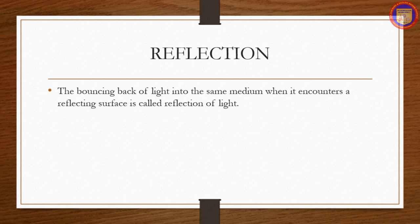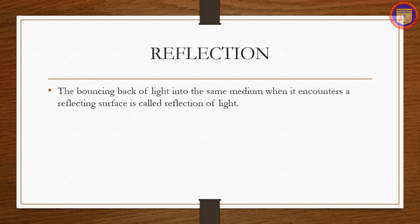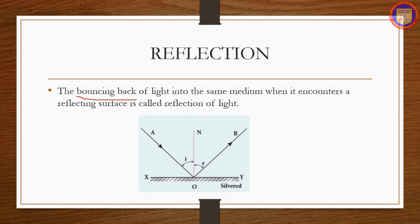In this chapter we are going to explain the phenomena of reflection. The bouncing back of light into the same medium when it encounters a reflecting surface is called reflection of light. Polished surfaces can reflect light. Mirrors which are silver coated at their back can reflect almost 90% of the light falling on them. The angle of incidence is taken as i and the angle of reflection as r, and n is the normal line shown in the diagram.